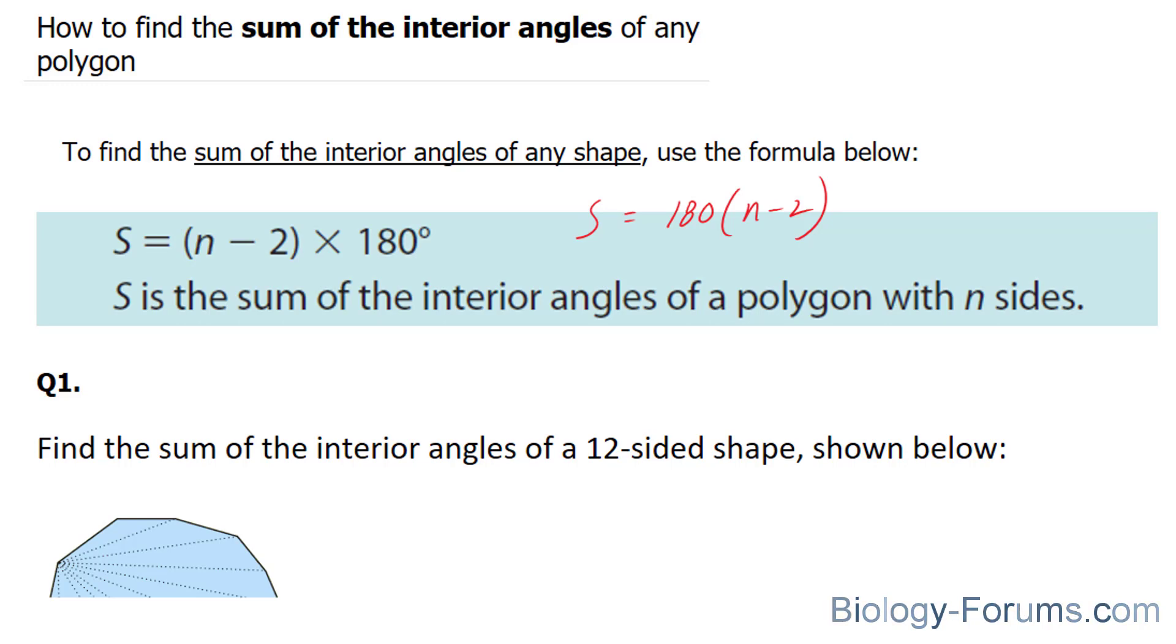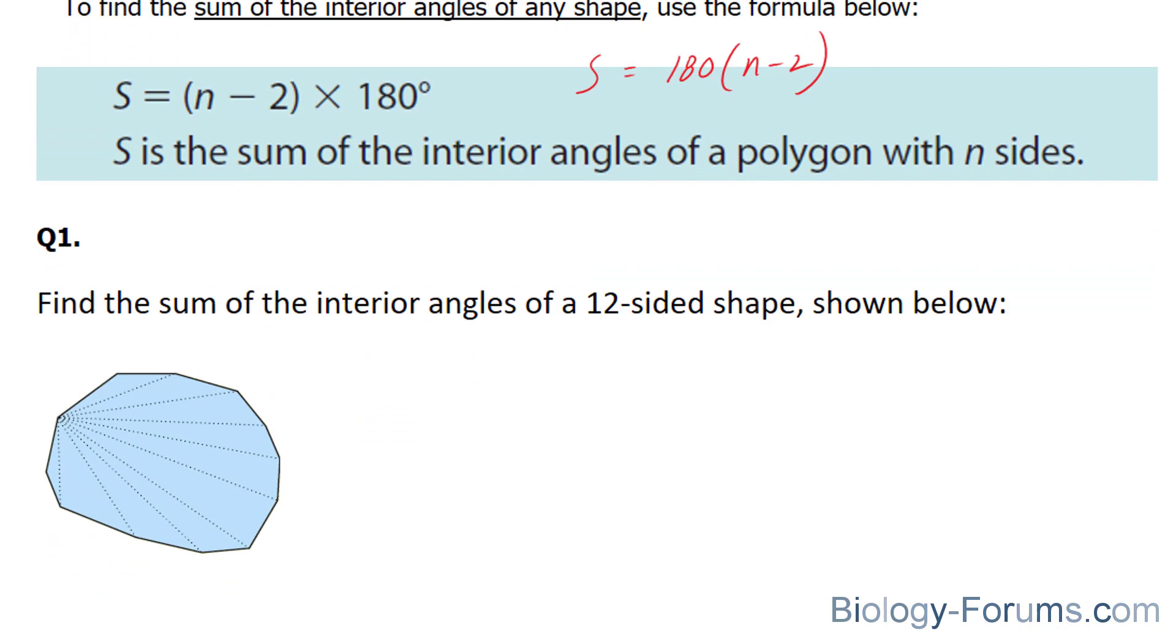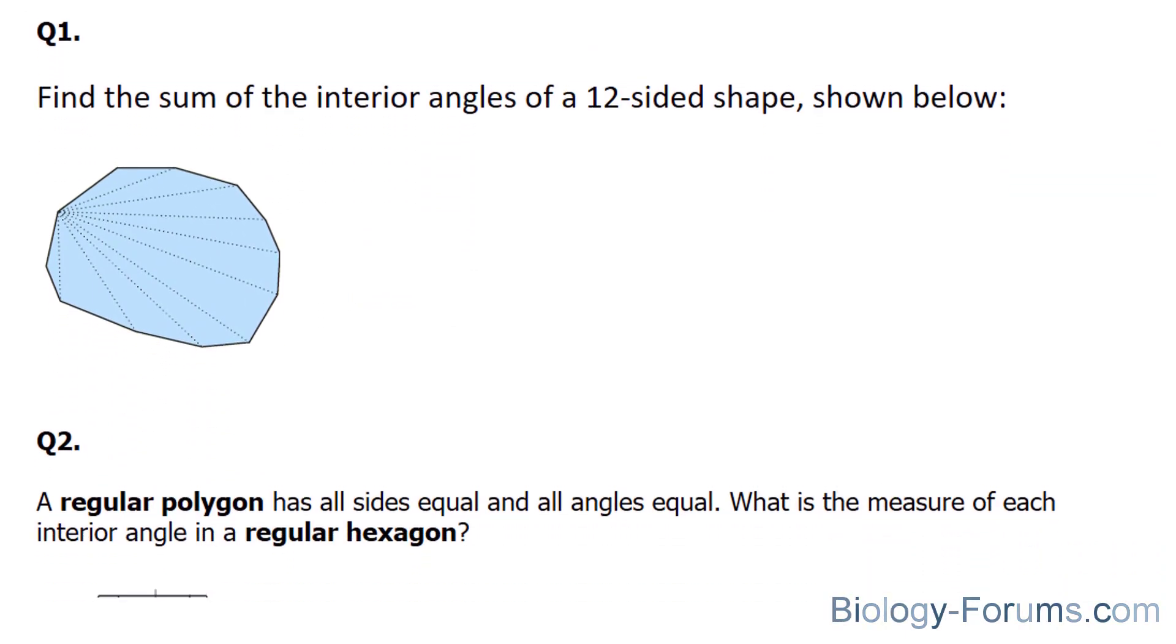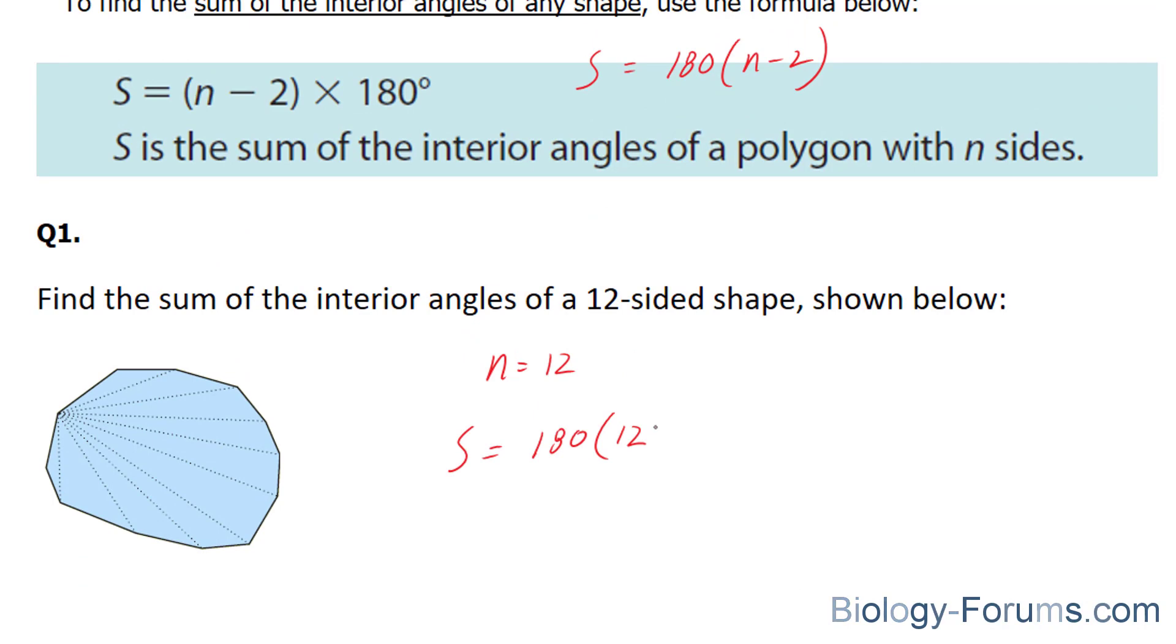So let's start with the simplest of the four examples. We are expected to find the sum of the interior angles of a 12-sided shape shown below. Now first, we have to define our n value, which was stated as being 12. Then we use the formula S is equal to 180 n, which is 12, minus 2.